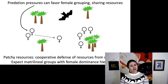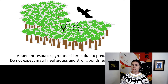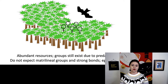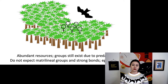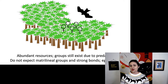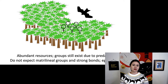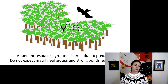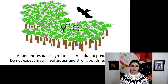But if resources are distributed differently and we have abundant resources, the group will exist due to predation, but there isn't really much to defend. So we're not going to expect those matrilineal groups with strong bonds — we're going to find a more egalitarian society.